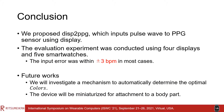Here is the conclusion. We proposed DISP2 PPG, which inputs pulse waves to the PPG sensor using a display. The evaluation experiment was conducted using four displays and five smartwatches. As a result, the input error was within 3 BPM in most cases. In the future, we will investigate a mechanism to automatically determine the optimal colors. The device will be miniaturized for attachment to a body part. Thank you for your attention.